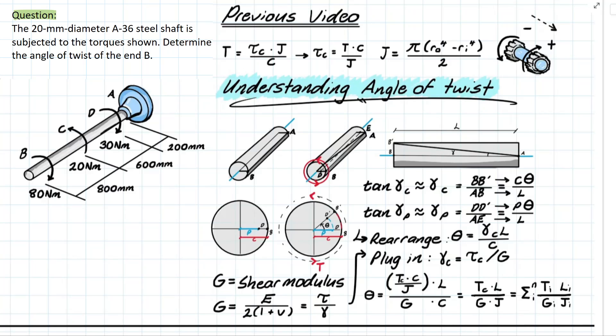So in other terms our opposite is going to be the length bb' and the adjacent is going to be this ab here.